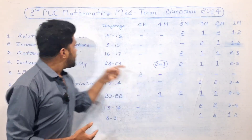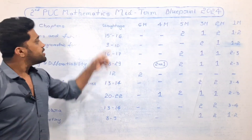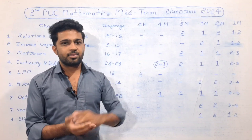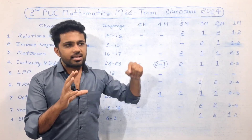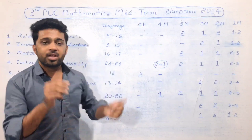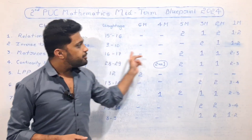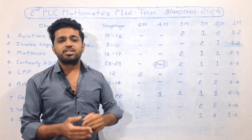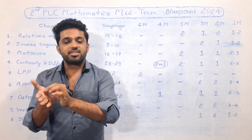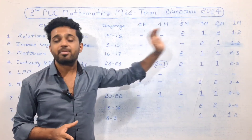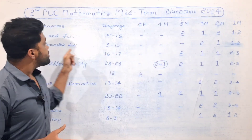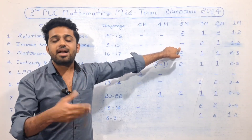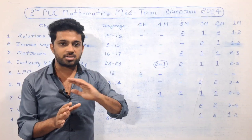The next chapter is Inverse Trigonometric Functions. In this chapter, there are 9 to 10 marks in the mid-term exam. In the final exam, there are 5 to 6 marks from this chapter. Focus on 3-mark and 2-mark questions for practice. There are also 5-mark questions in this chapter — follow all answers for the 5-mark question.